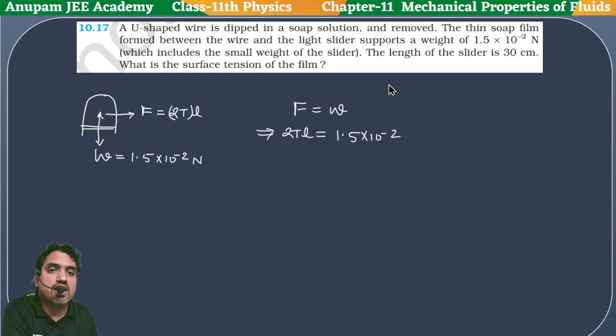So 2T × L = 1.5 × 10^-2. We need to find the surface tension of the film. Length given is 30 centimeters. So 2 × T × 30 centimeters, we'll convert to meters by multiplying 10^-2, which equals 1.5 × 10^-2.